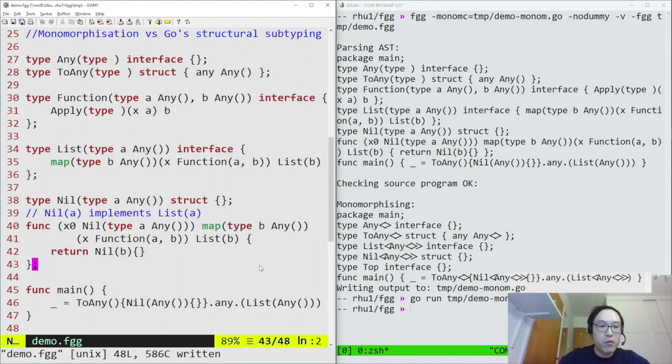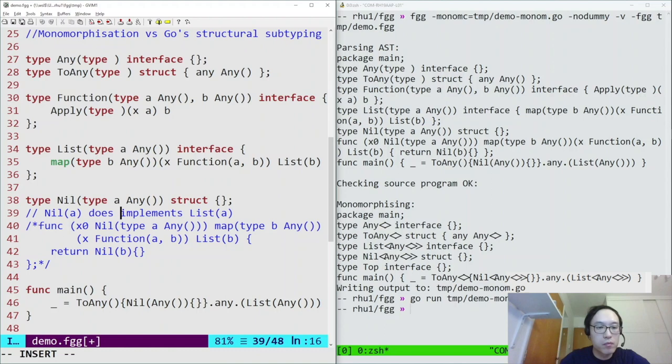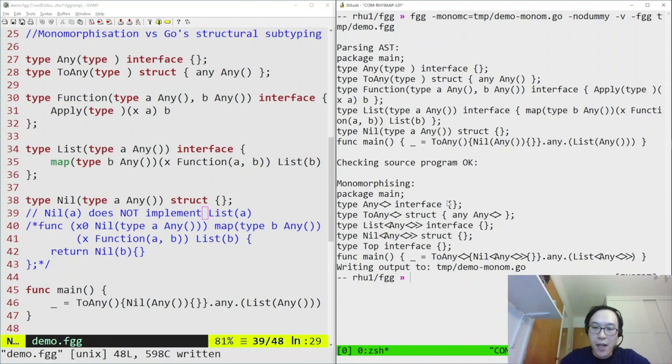If we were to break the program, like so, if we re-monomorphize that, it actually gives exactly the same output, and so if we run it again using Go, this still succeeds, but it's incorrect, because what we want is the type assertion to fail, because nil no longer implements list.